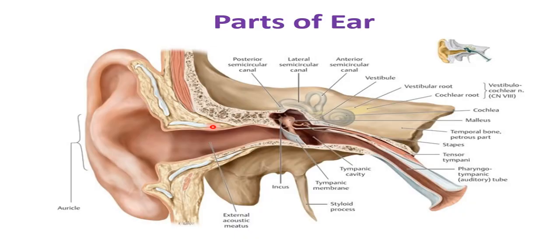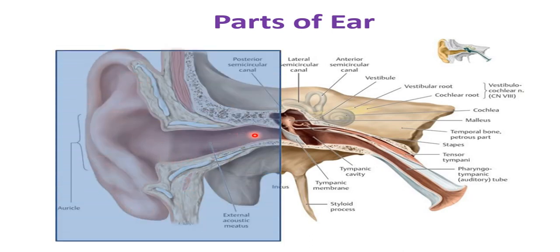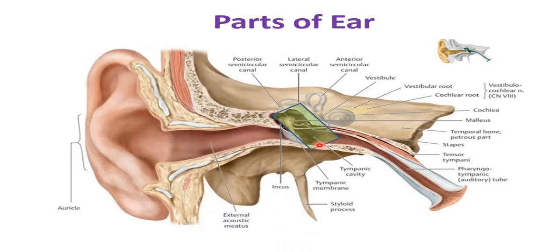The ear is the organ of hearing and balance and is divided into parts. The external ear consists of the auricle and the external acoustic meatus. The auricle gathers sound waves and transmits them through the external acoustic meatus towards the tympanic membrane, which oscillates and separates the external ear from the middle ear. The middle ear houses the ossicles, which vibrate and pass vibration to the internal ear — consisting of the cochlea, vestibule, and semicircular canals.